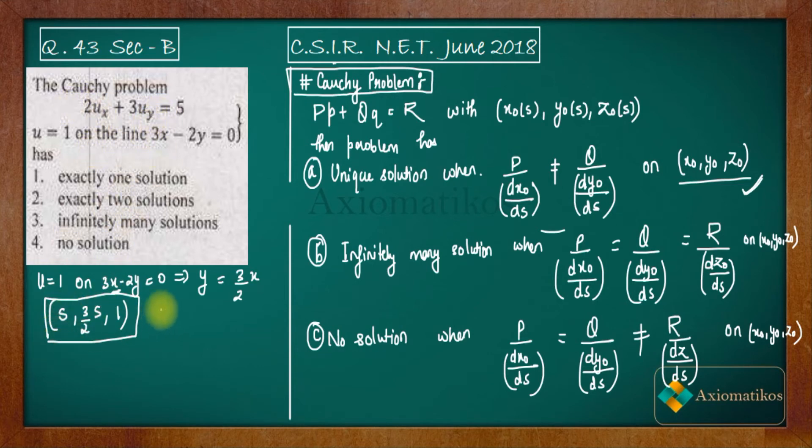Let us now find out what is capital P? It is 2. What is capital Q? It is 2. What is capital R? It is 5. So 2 by dx₀/ds. So dx₀/ds will be 1 because this is your x₀, this is your y₀, this is your z₀. Now it is 3 by 2 if you will differentiate it with respect to y.